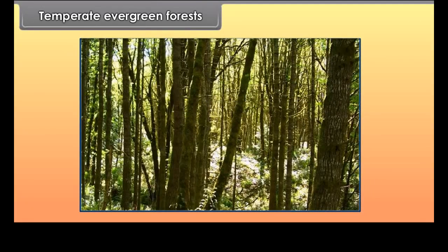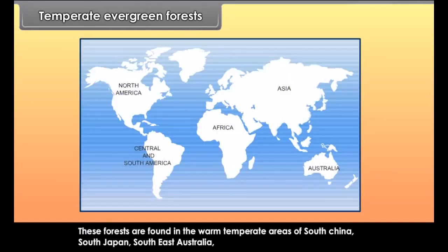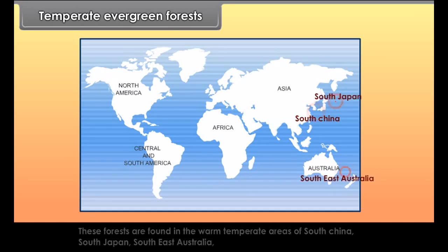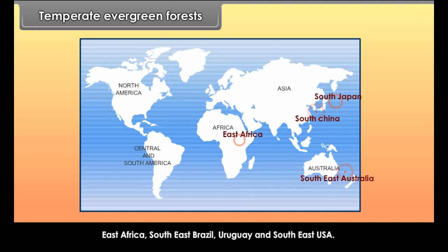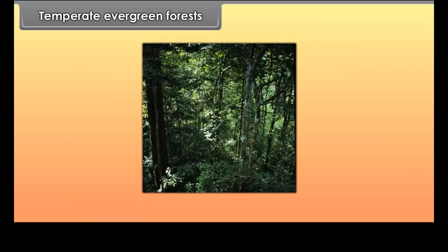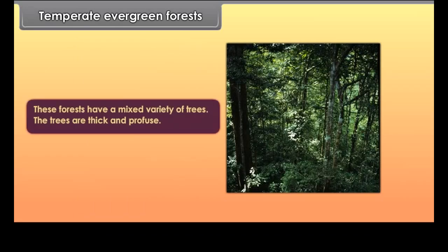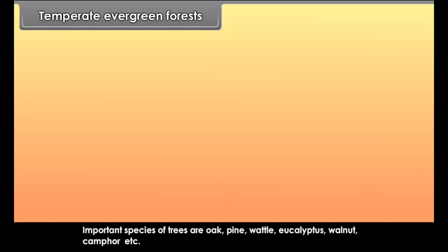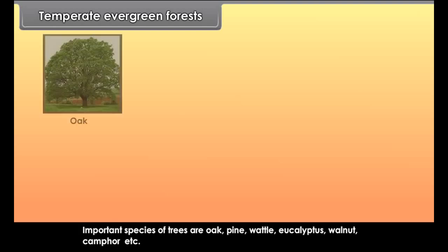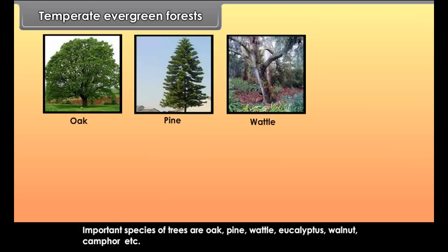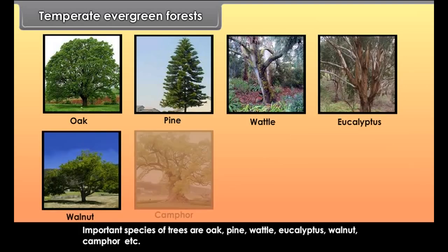Temperate Evergreen Forests. These forests are found in the warm temperate areas of South China, South Japan, Southeast Australia, East Africa, Southeast Brazil, Uruguay and Southeast USA. Characteristics: These forests have a mixed variety of trees. The trees are thick and profuse. Important species of trees are oak, pine, wattle, eucalyptus, walnut, camphor, etc.